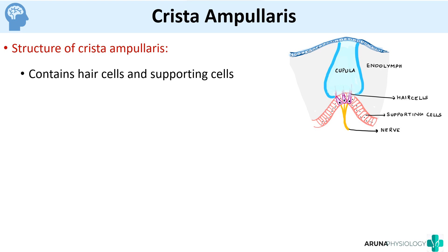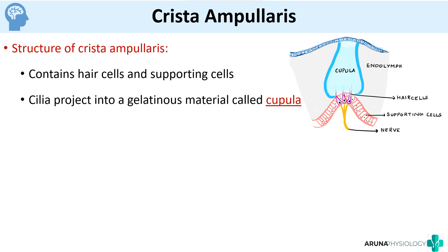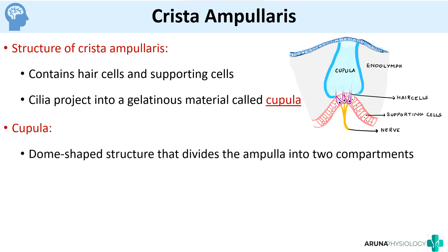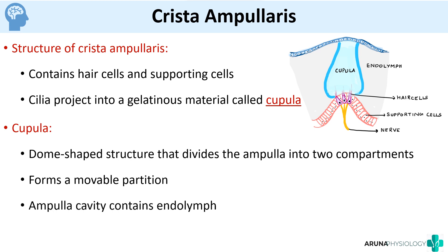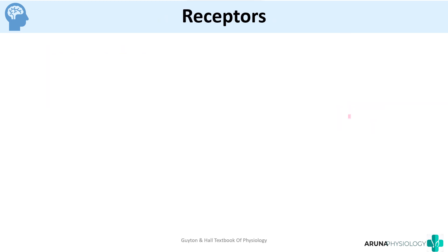The cupula is a dome-shaped structure that divides the ampulla into two compartments, acting like a mobile partition. The ampullary cavity contains endolymph. The cilia of the hair cells project into this gelatinous cupula material.